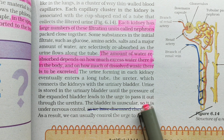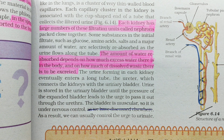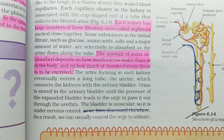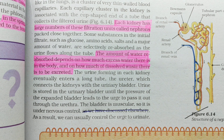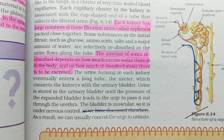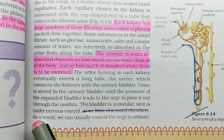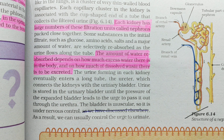The bladder is muscular, so it is under nervous control — as a result, we can usually control the urge to urinate. Bladder ek muscular organ hai aur ye nervous system ke under controlled hota hai, isliye hum apne urinate karne ki urge ko control kar sakte hain. So that was excretion in human beings. Next we will cover excretion in plants. That's it for this video — see you in the next one.